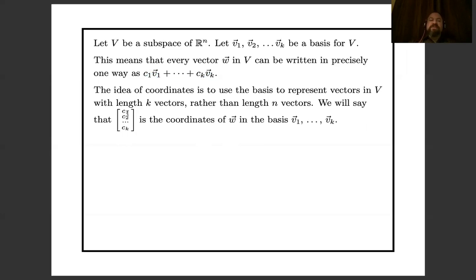And so we'll say that c1, c2, ..., ck is the coordinates of w in the basis or with respect to the basis v1 through vk. So what you want to think here is that maybe n is like a thousand because we have some database with a thousand numbers stored for each person, and k is like two because we've isolated that all the important stuff is happening in some two-dimensional subspace of variation, and we want to be allowed to work with vectors that have just two entries rather than vectors that have a thousand entries.